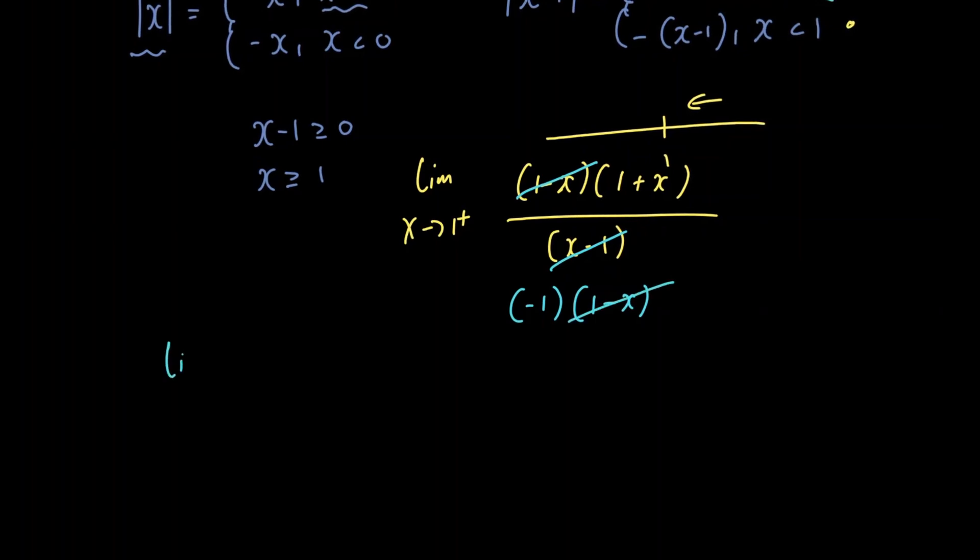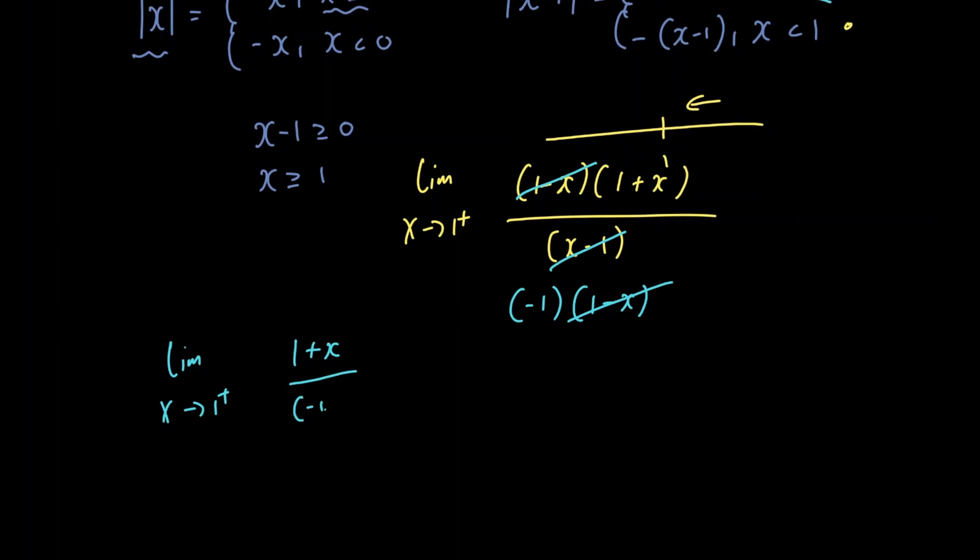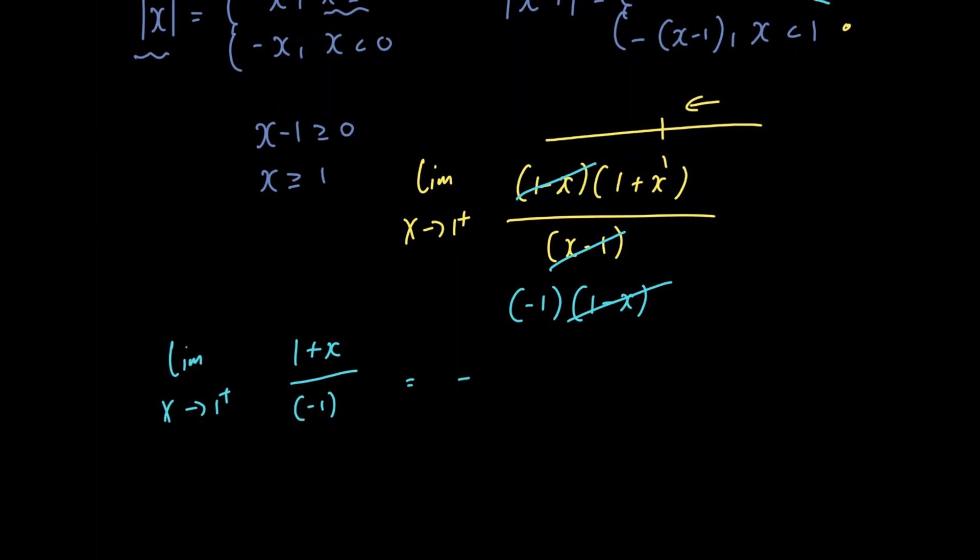And we're left with the limit as x approaches 1 from the right of 1 plus x divided by negative 1. And now we can go ahead and just let x be equal to 1. In doing so, we get our final answer of minus 2.